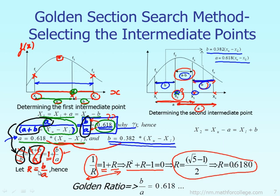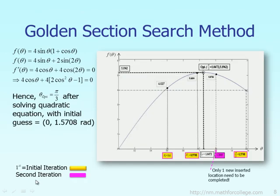Why we select x1 and x2 in that way will become obvious when we go to the next example. Suppose we look at one example: the horizontal axis represents theta, the vertical axis is f(theta), and the function we want to find the maximum of is given as 4sinθ times (1 + cosθ). You can plot it and it will look something like what is shown on the screen.